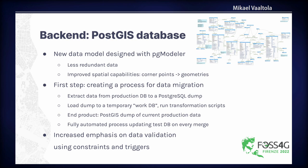Jumping into more detail on the backend, the first thing we did was work on the data model. The current database is in Oracle, and there was a lot of revising of the old data model going on before we even started, because there was a lot of redundant data and data that wasn't used that much. The new data model is cleaner compared to the old one. One of the big things is that there are now improved spatial capabilities. In the old Oracle database, geometries were stored as corner points — just numeric data. One of the big things we had to do is convert that numeric data into actual polygon geometries or point geometries.